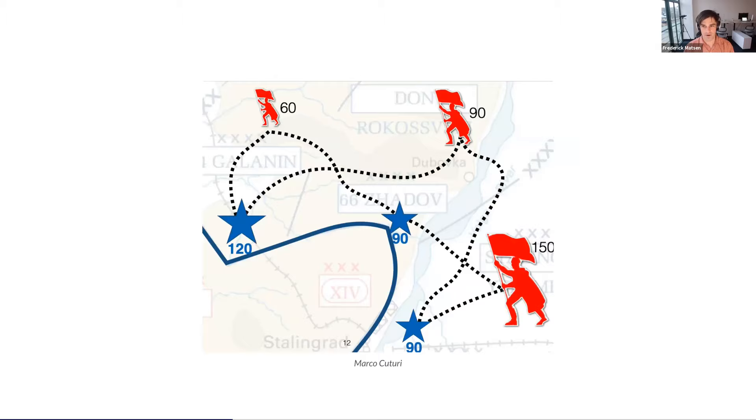For that, we're going to use the framework of optimal transport. I'll motivate this by thinking about a metaphor with soldiers on a battlefield, which is actually the original motivation for this type of work. Imagine that we have soldiers at different locations on a battlefield: 60 here, 90 here, 150 here. As generals, we would like to move these soldiers to a new configuration with 120 soldiers here, 90 here and 90 here. We'd like to do that in a way that requires the minimum amount of transport for these soldiers, hence the name optimal transport. This is related to something called the earth movers distance. Optimal transport is what mathematicians say, earth movers distance is what computer scientists say.